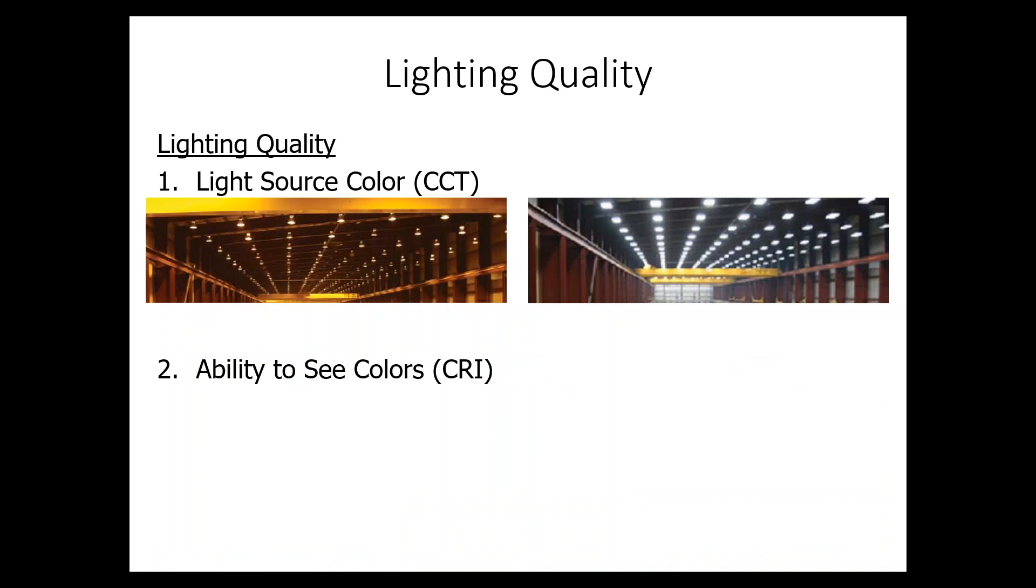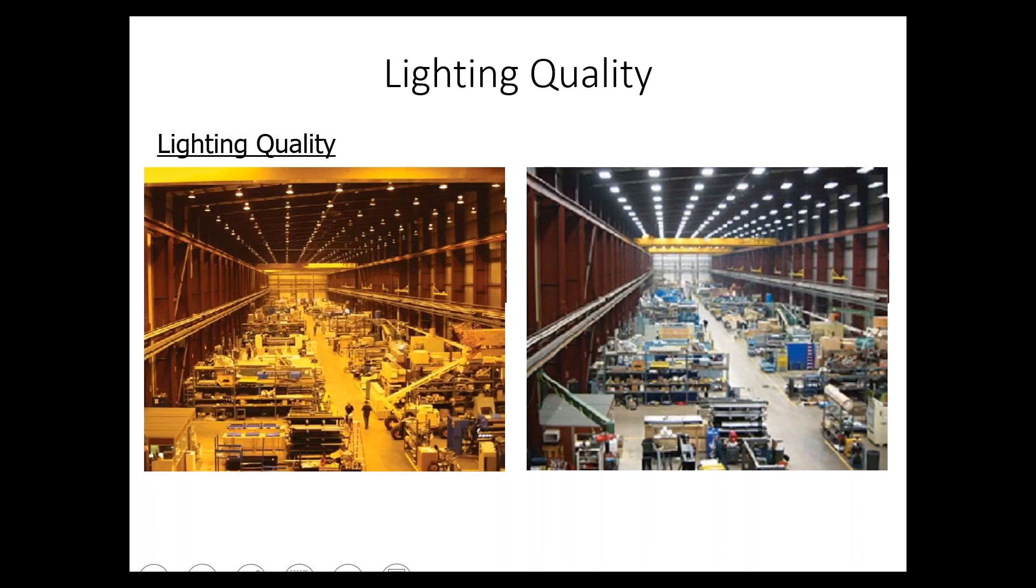Now, a good way to show how color rendering index and correlated color temperature go together: the left one is more yellow and the right picture is more white. That tells you the difference between the color temperature. But you can see more when you take a look at the ability to distinguish colors. If you look down here under these same pictures, you can see that it's very hard to tell yellows and blues and reds. Where in the right side picture, you can see better color rendition. You can notice these other colors and distinguish them better. And most people are more comfortable with that white light and high color rendering index light.